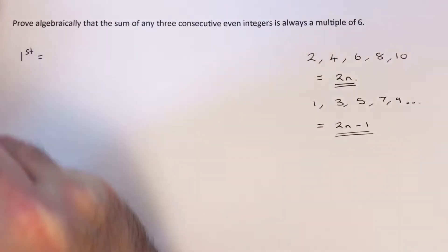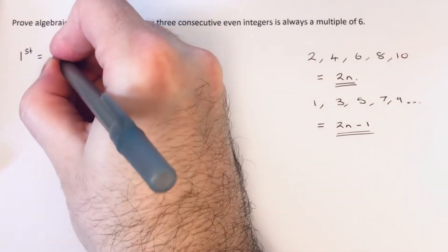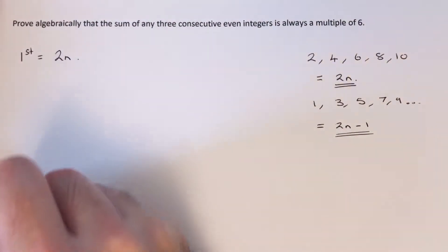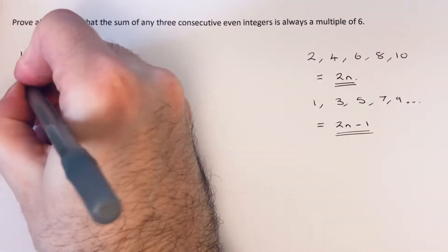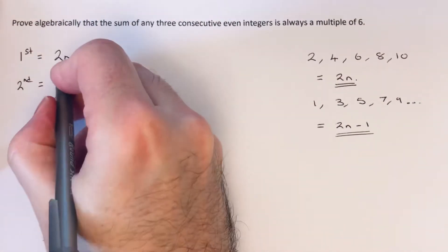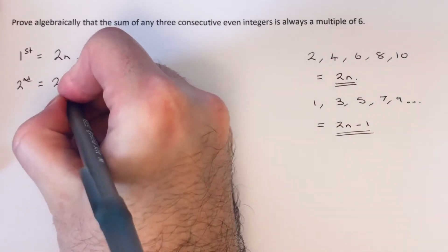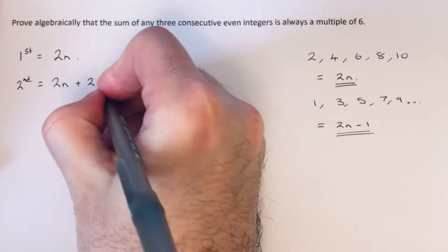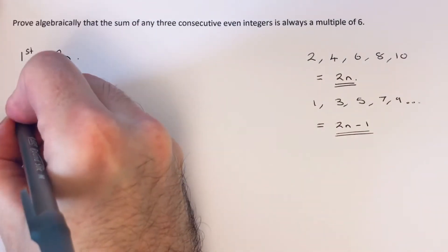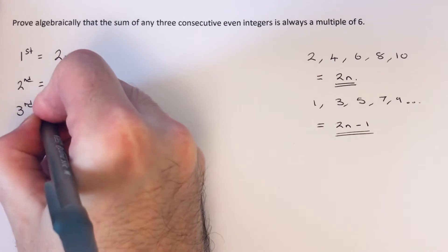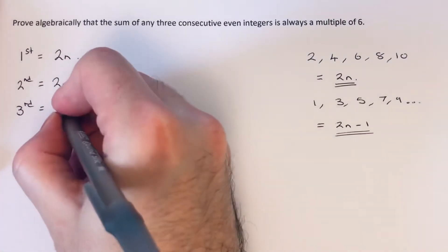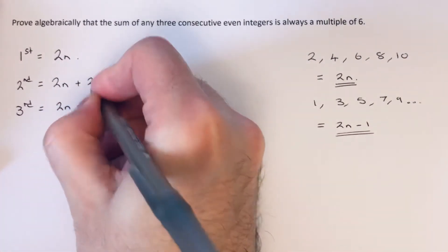Let's call our first even number 2n. That would mean our second even number would be two ahead of this, that would be 2n plus 2. Then our third consecutive even number would be 2n plus 4.